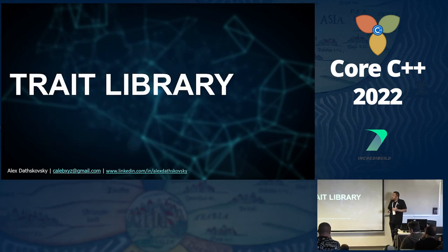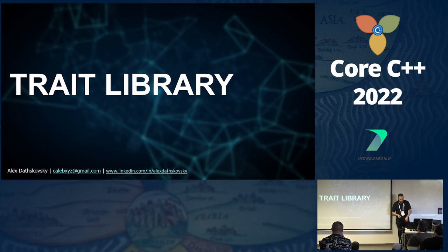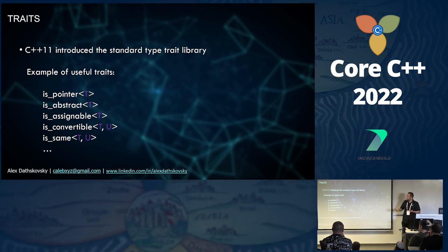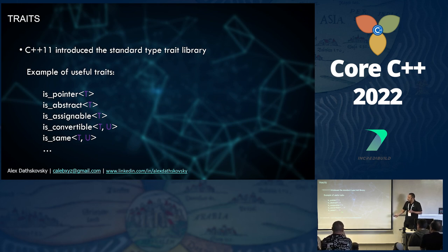Now we get to something actually usable during this talk: the type traits library. Added in C++11 to the standard, it lets you create many constraints for your templates. You can say 'I want to do something only with pointers,' or 'only if it's an abstract class,' or check if T and U are the same type. Very useful — just look at type_traits.h.